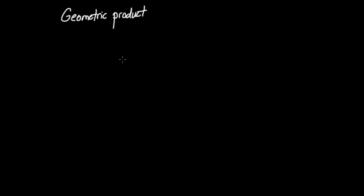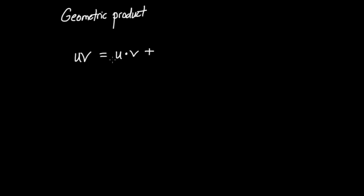Now I'd like to move on to another kind of product. This is one of the big innovations in math — Clifford had the idea of defining a new product called the geometric product, which is the sum of the dot product and the wedge product between two vectors. So the geometric product UV is defined as U dot V plus U wedge V. That's the definition.